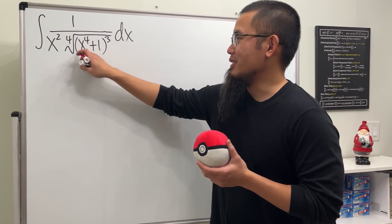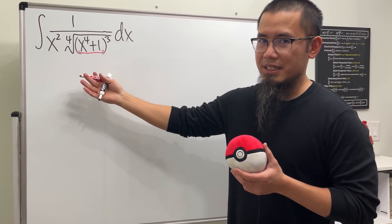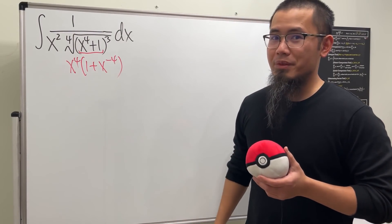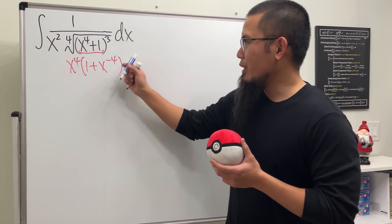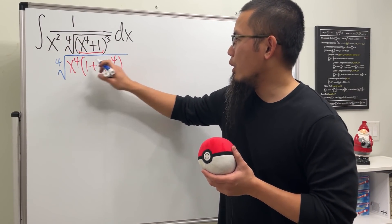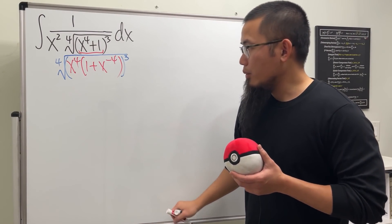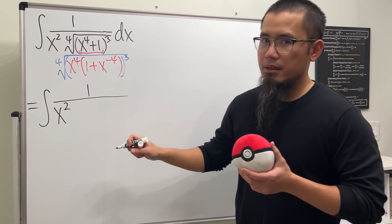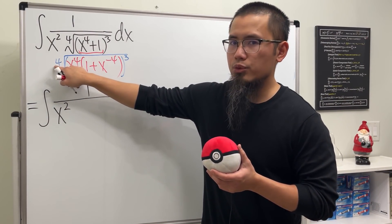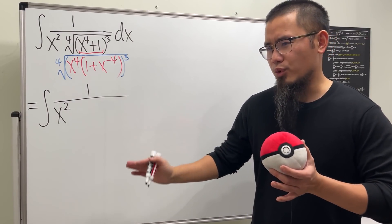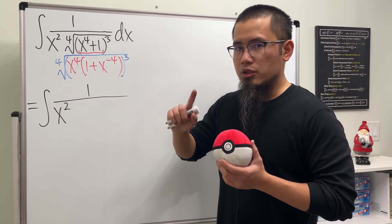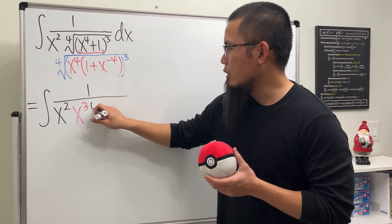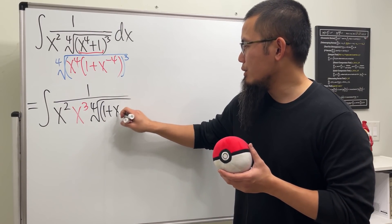After seeing the solution — and to be honest, I didn't figure this out myself — here's how we approach it. We factor out x to the fourth power, which gives us one plus x to the negative four inside. Don't forget we still have the fourth root and the parentheses raised to the third power. Breaking it apart, we get one over x squared in the front; with x to the fourth power under the fourth root that's just x to the first, and combined with the third power that gives us x to the third power overall.